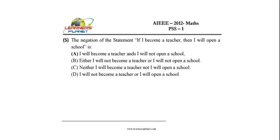We need to find the negation of the statement: 'If I become a teacher, then I will open a school.' This is an if-then conditional statement, so let us find how to determine the negation of an if-then statement.